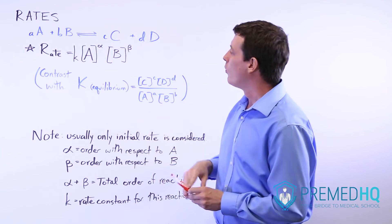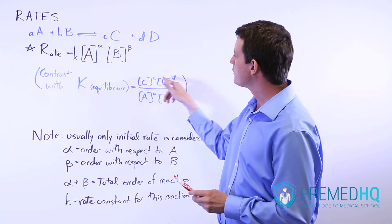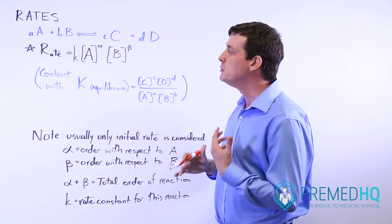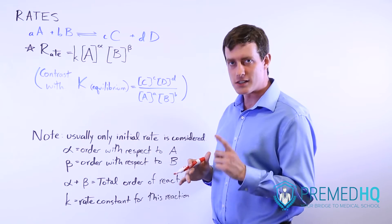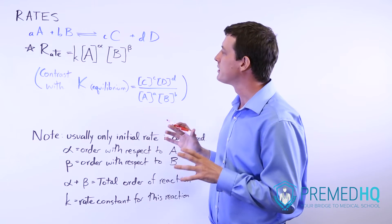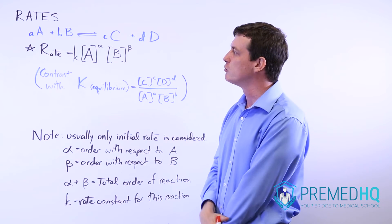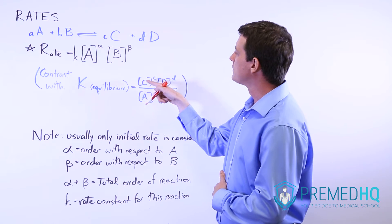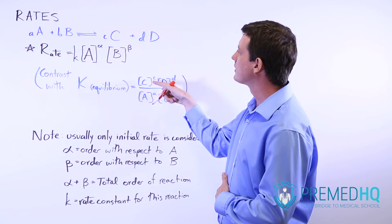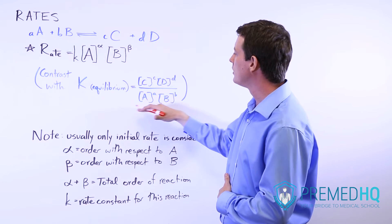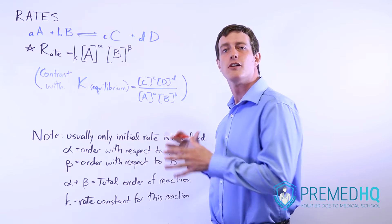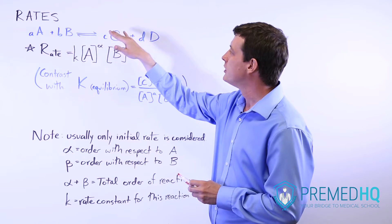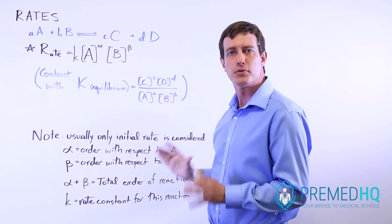It's important to realize that whereas with equilibrium you always raise to the stoichiometric coefficient, you don't always do that with rates, and that's a common stumbling block for students when going through rate problems. Notice also that equilibrium involves looking at the concentrations of products raised to their stoichiometry over the concentration of reactants raised to theirs, and this is not true for rates. Rates do not consider the amount of product there.